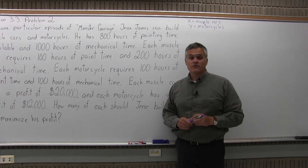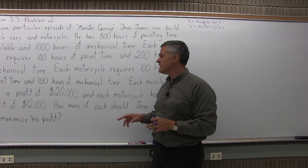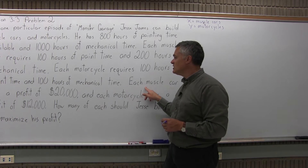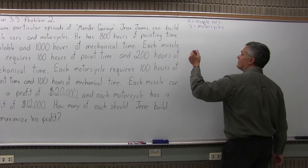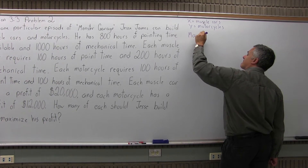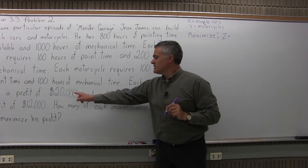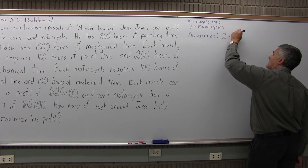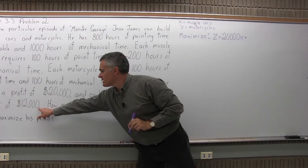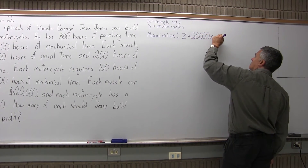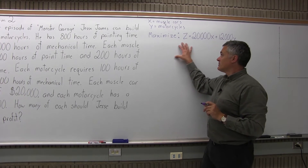Step two is write out your objective function. You want to look for information that's typically about profit — it could be something else like revenue, but usually profit, and it's usually near the end. Near the end, it says each muscle car has a profit of $20,000 and each motorcycle has a profit of $12,000. To write out your objective function, we want to put: maximize Z equals 20,000X plus 12,000Y. So Z equals 20,000X plus 12,000Y. That's step two.